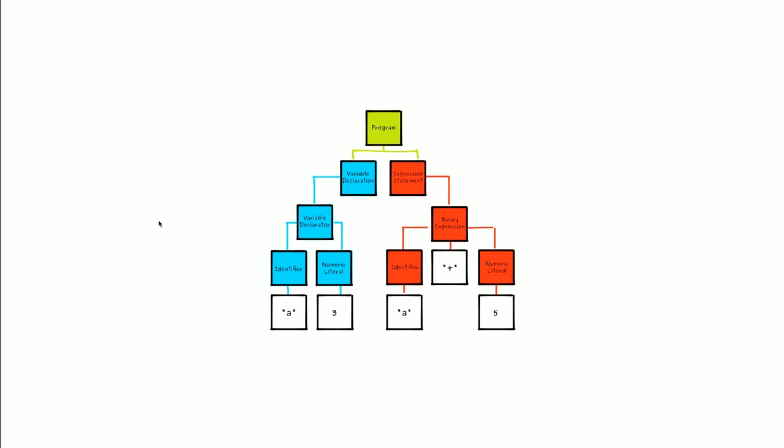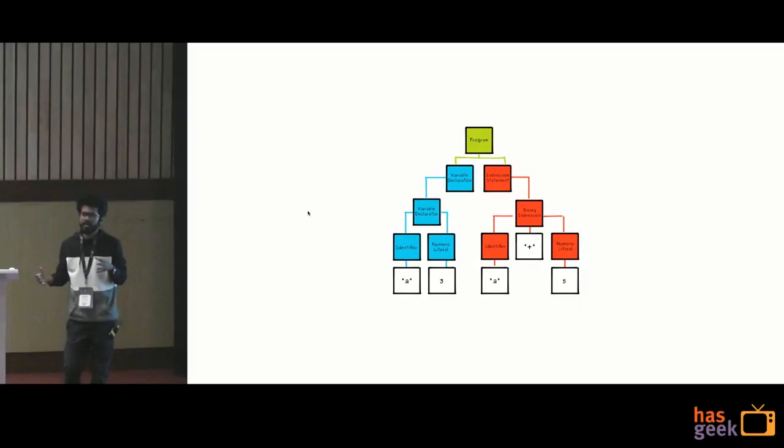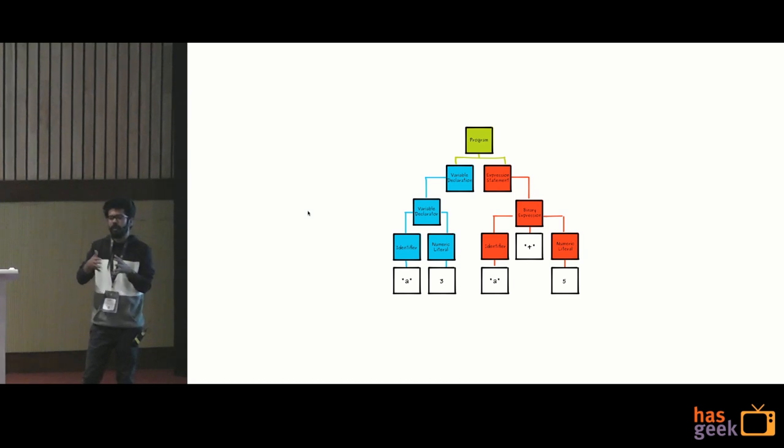This is a flowchart of how things work. Every Babel plugin using Babylon as the parser always starts with a root node called `program`. In our example, we had a variable declaration — you see a blue box. Then two declarations: identifier `A` and numeric literal `3`. Then we did an addition operation, which is an expression statement. Because two things are involved, it's a binary operation with a left side (identifier `A`) and a right side (numeric literal `5`), and an operator which is `+`. This is how your AST tree actually looks when your code is parsed. Drawing this diagram on paper will help you better understand writing Babel plugins.